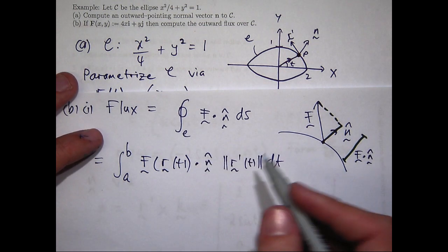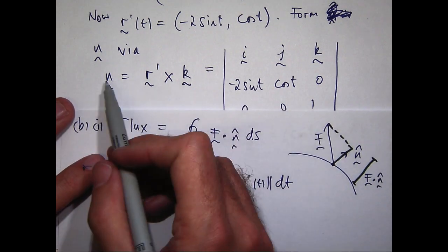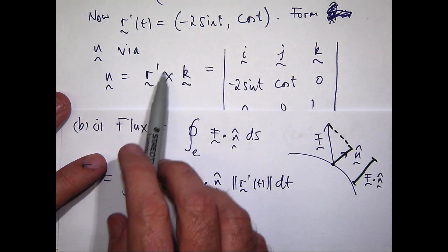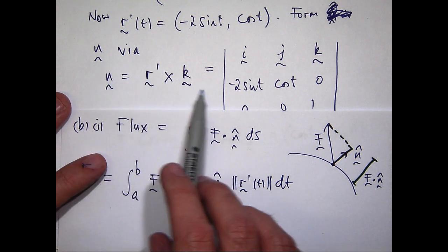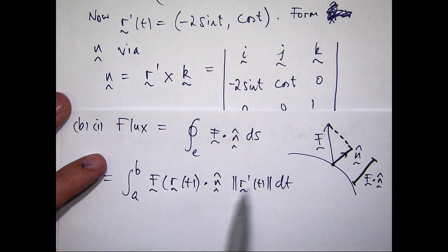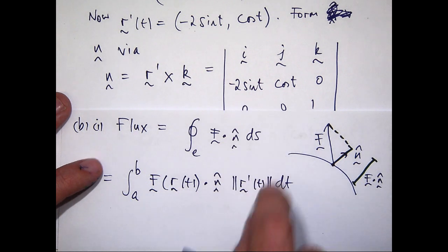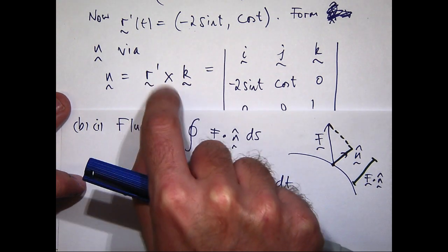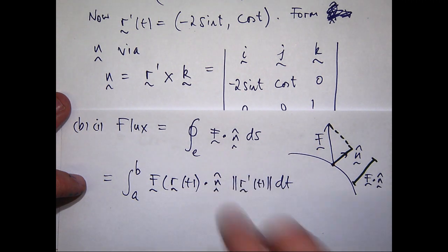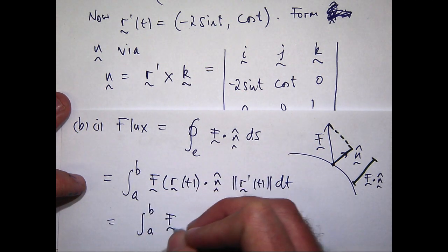And what's n hat? Well, from up here, we know that n hat is r dash crossed with k. Now, if I wanted to make this a unit vector, I would just divide by the magnitude of r dash. So if I essentially divide this by r dash, the magnitude of r dash, then I'm going to get some cancellation. So essentially what I'll have is the following.